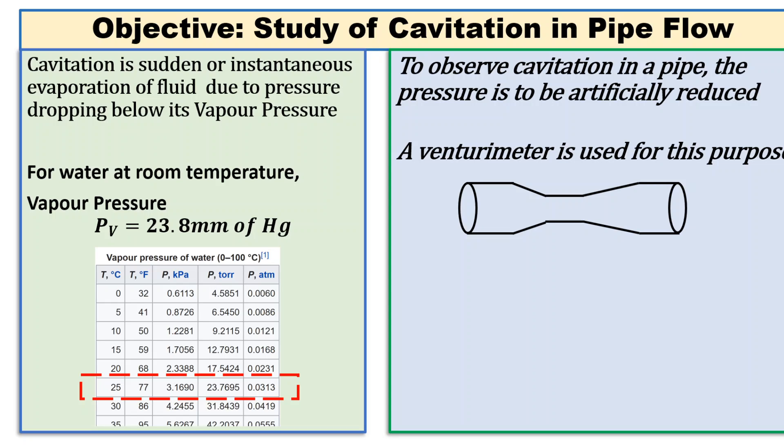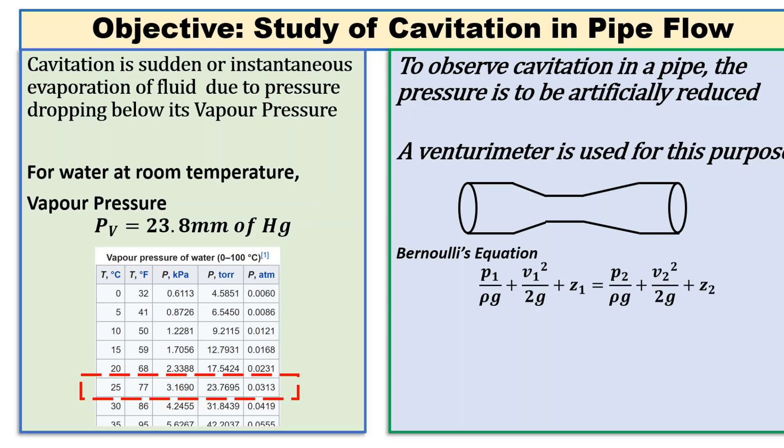Based on Bernoulli's equation, we can say that as velocity increases, pressure will decrease. In the case of a venturi meter, velocity at the throat section increases as the fluid has to pass through a smaller cross-sectional area.